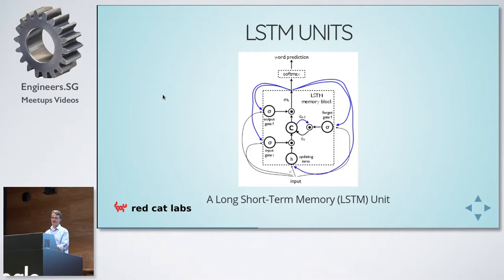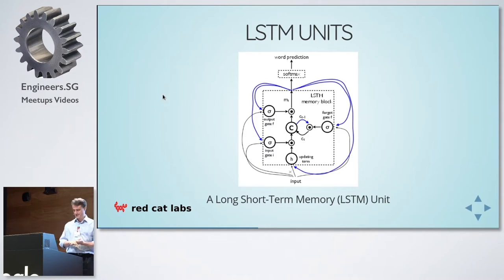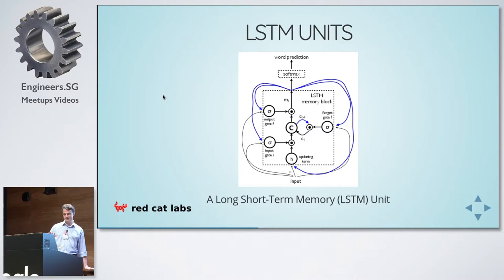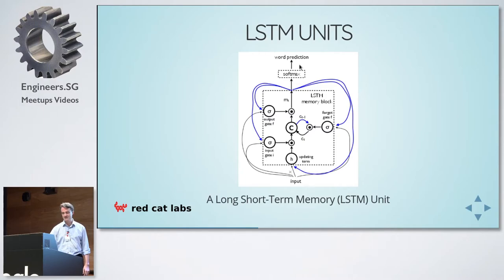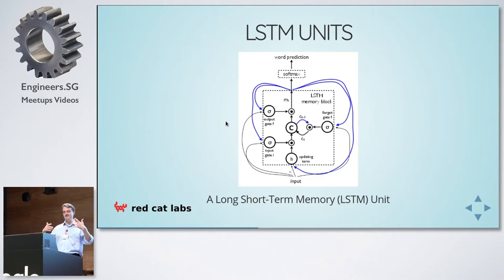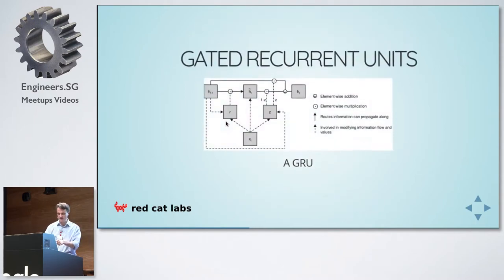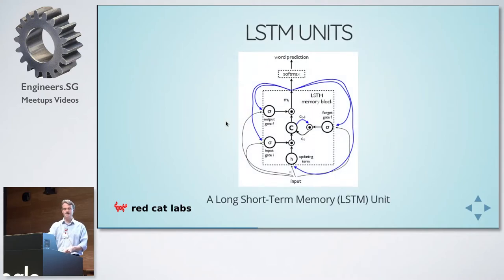Here's another very popular one — invented by Schmidhuber in Switzerland. This is the Long Short-Term Memory unit, or LSTM. Here are your inputs and your hidden states, with all sorts of multiplies and non-linearities. But the only difference between GRU code and LSTM code is the letters LSTM as far as Keras is concerned.